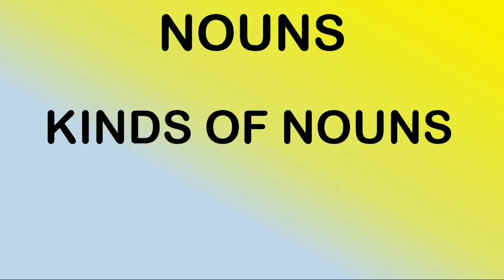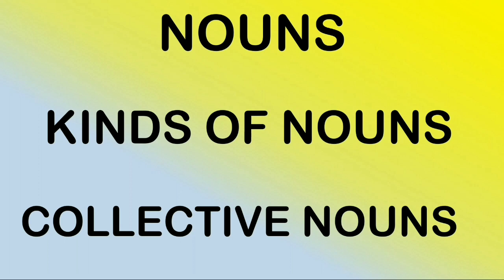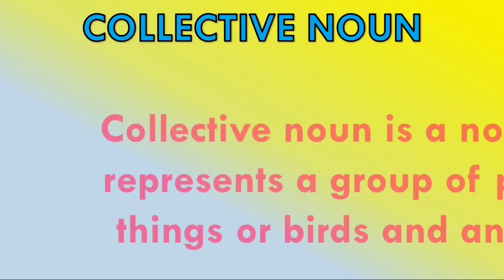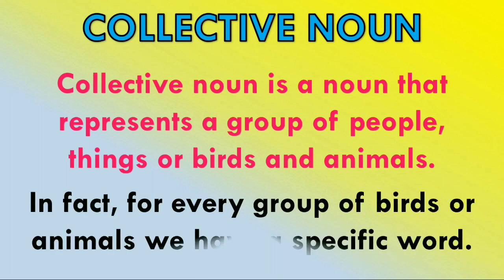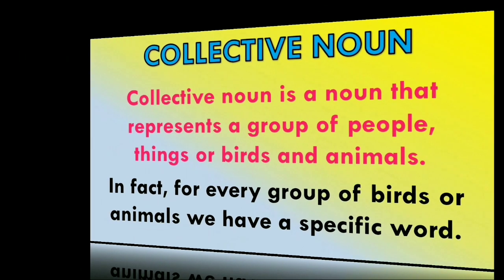Do you remember in an earlier video we learnt about nouns, kinds of nouns, and particularly collective nouns of people? Now we are going to have a look at collective nouns of birds and animals. Let us once revise: a collective noun is a noun that represents a group of people, things, or birds and animals. In fact, for every group of birds or animals we have a specific word. Let us have some examples.